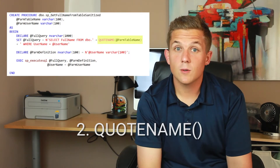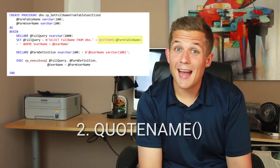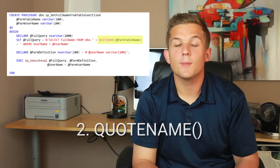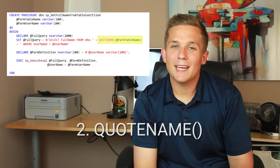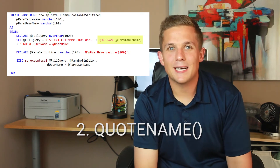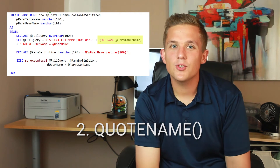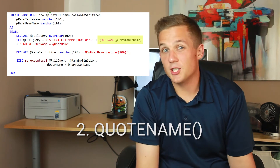Option two is to use SQL's QUOTENAME function. QUOTENAME adds delimiters to your input parameter values — it adds brackets by default, and by escaping any single quotes in your string, it prevents injection attacks from happening. It's limited to outputting 128 characters though, so you have to keep your input parameters short.